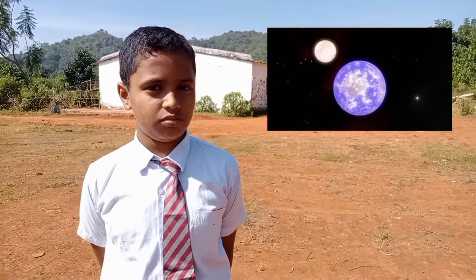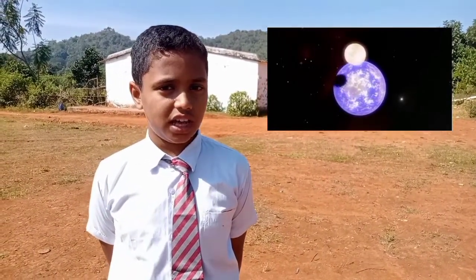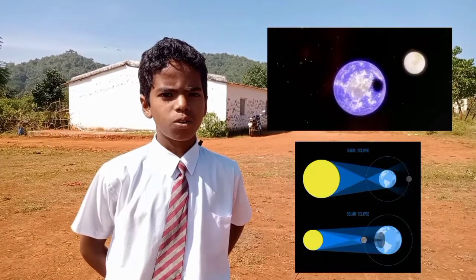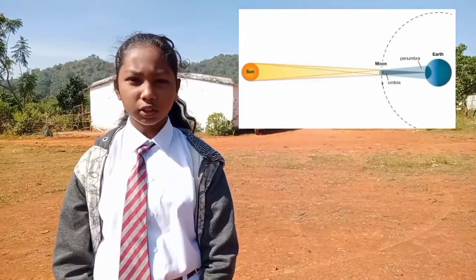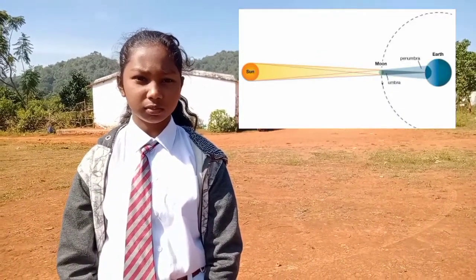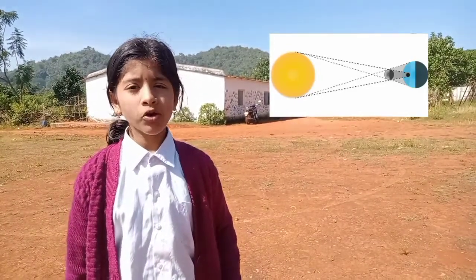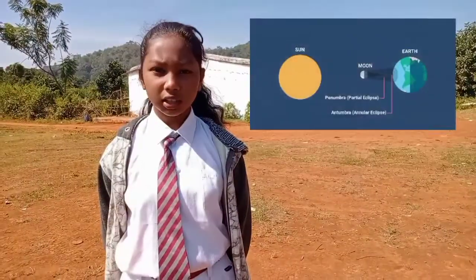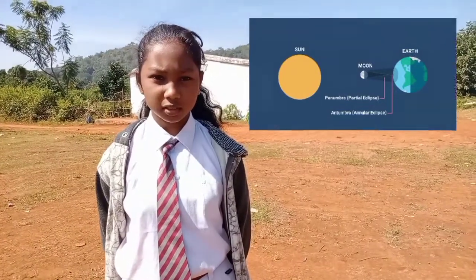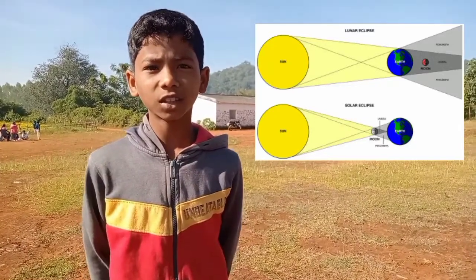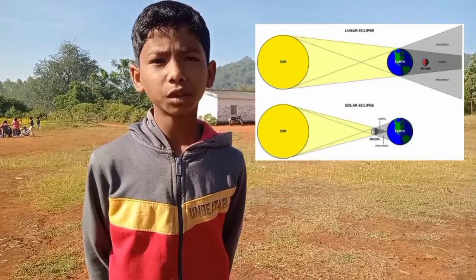When the moon and earth come in a straight line with the sun, they cast shadows on each other, depending on whether the earth or the moon is in front of the sun. A shadow forms when the path of light is blocked by an opaque object. The earth and the moon are opaque objects, and an eclipse is a shadow that makes the moon or sun partially invisible for some time.